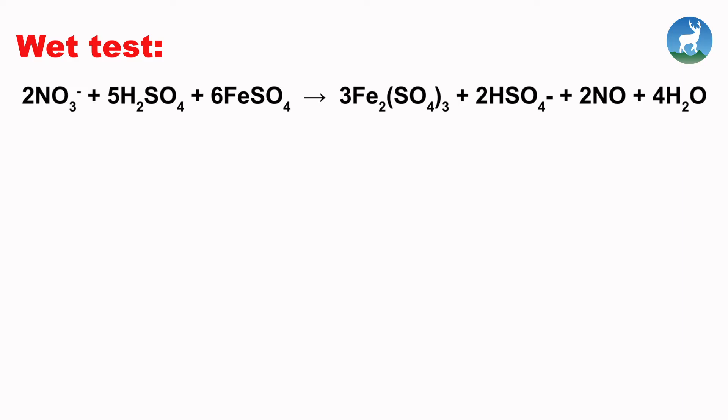The reactions involved in the ring test are: The nitrate ion reacts with sulfuric acid and ferrous sulfate, resulting in formation of nitric oxide, which then reacts with ferrous sulfate to give nitrosyl ferrous sulfate.